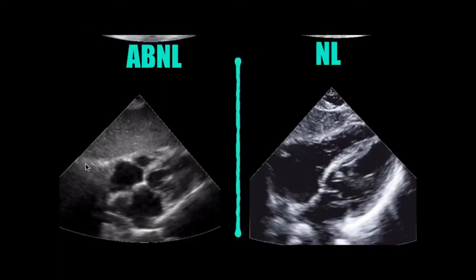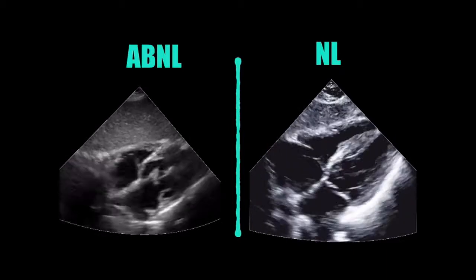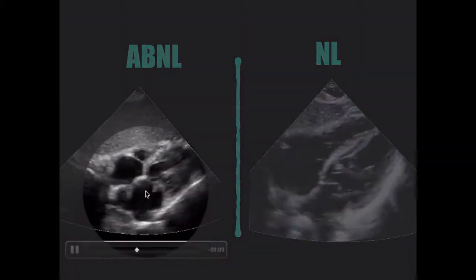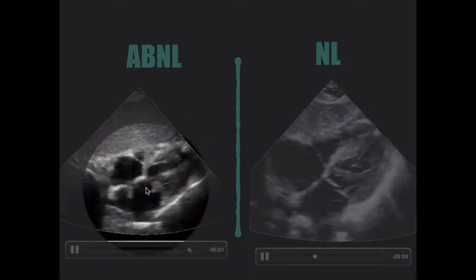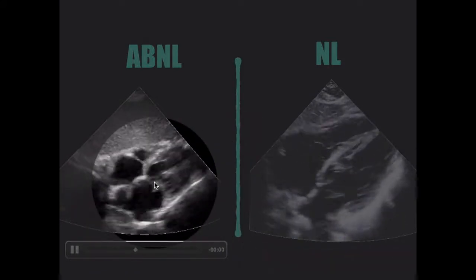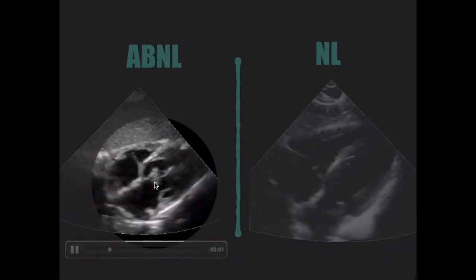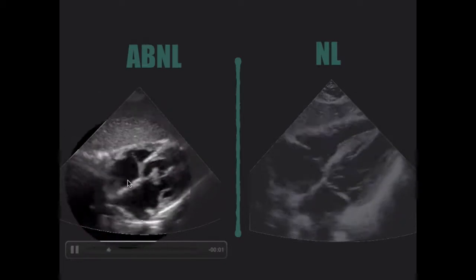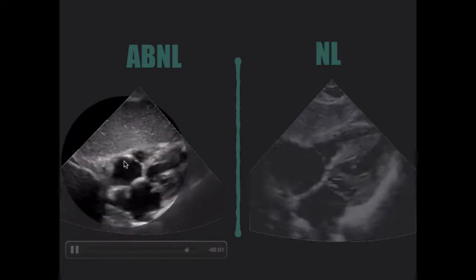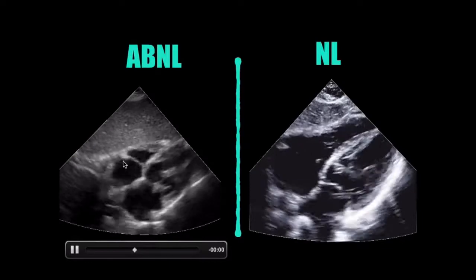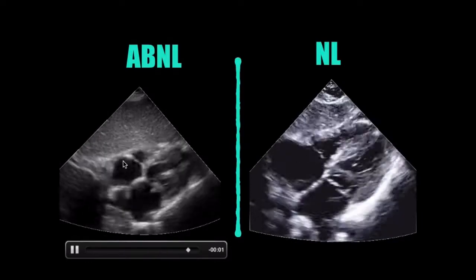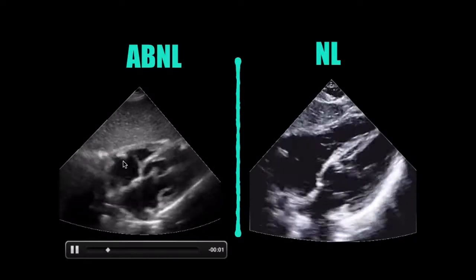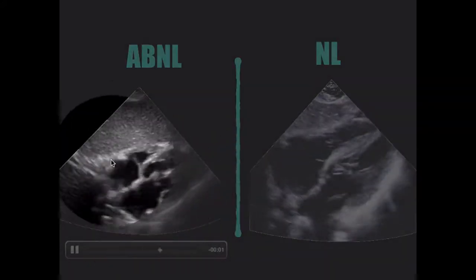This is a sub-xiphoid view. Where's the vegetation? Mitral valve, exactly. Right here this is normal, this is abnormal — you see that little booger right there? That is a mitral valve endocarditis. You see that bright thing right there that's causing that weird artifact below? That's just a little calcification. You'll see that on valves — you'll see shadowing behind it. That one over there is not endocarditis, but this guy right here is.